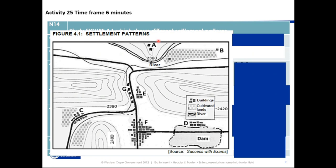Let's go to A. Settlement A is located away from water because there's a big possibility of flooding — there is a river on the screen. That settlement is going to be in danger of flooding. So what kind of settlement are we going to refer to there? It's going to either be a dry point settlement or a wet point settlement.